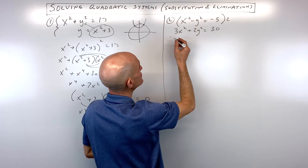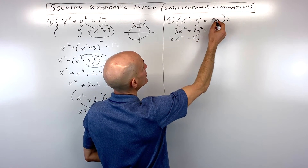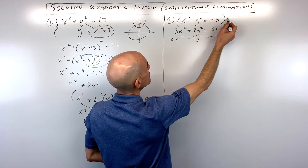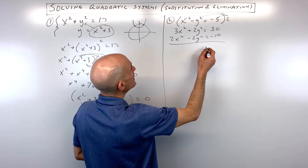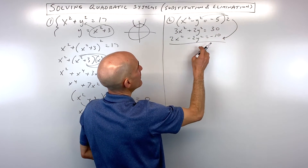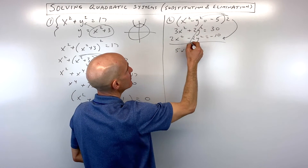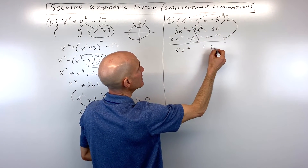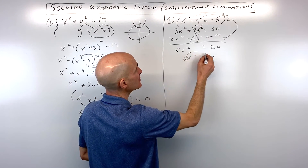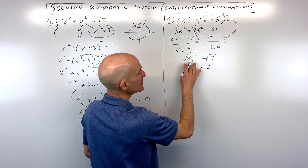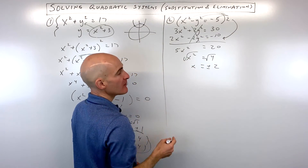Distributing the 2 gives us 2x squared minus 2y squared equals negative 10. Adding straight down, we get 5x squared, the y squareds cancel, and we get 20. Dividing both sides by 5 gives us x squared equals 4. Taking the square root of both sides — remember you get two answers — gives plus or minus 2.